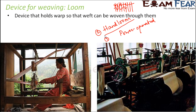In hand looms, it needs more effort from the person. A lot of strength is needed to do the weaving job, and that is why mostly men are employed in hand looms. Whereas in power looms, since everything happens using machines, not a lot of strength is needed, so girls and young women are also employed in power operated looms.